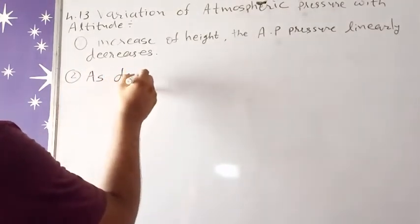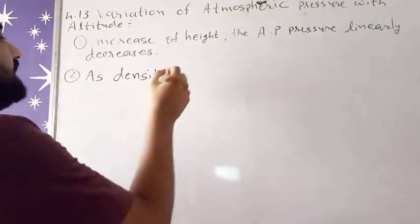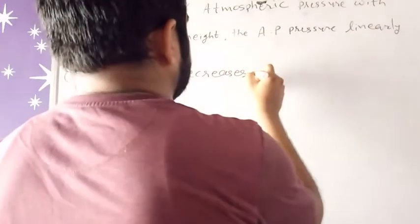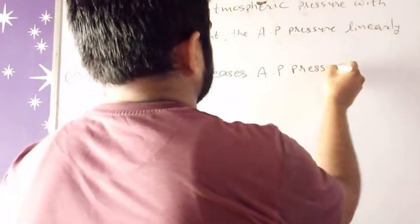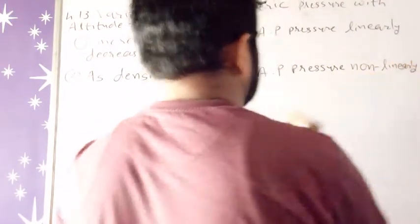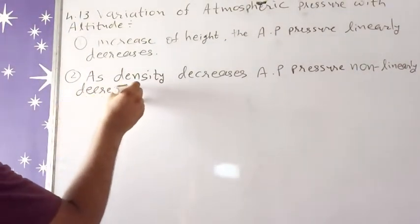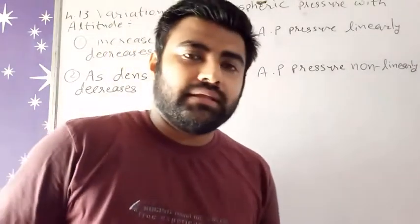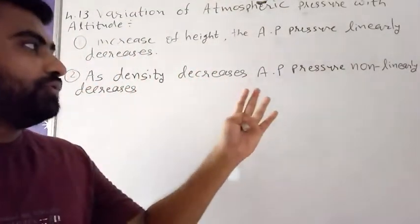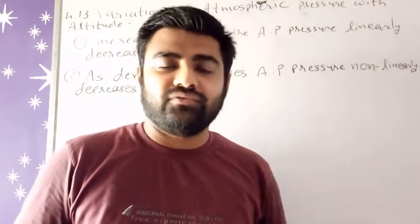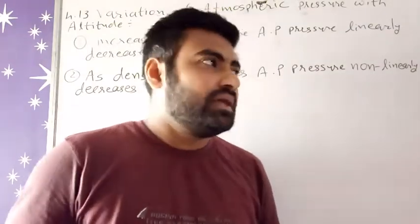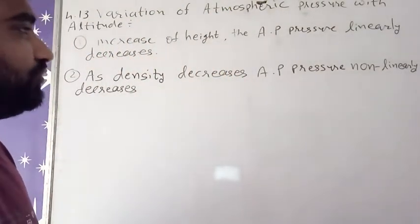The second reason: as density decreases, atmospheric pressure decreases non-linearly. This is the non-linear behavior — if density is decreased, then the pressure is non-linearly decreased. It is directly proportional — actually, it is inversely proportional. So here are the two reasons.